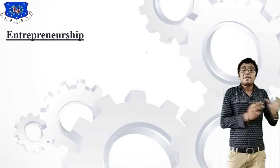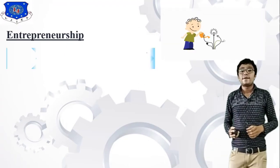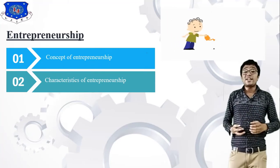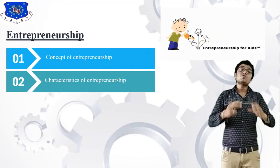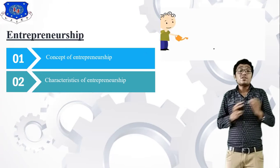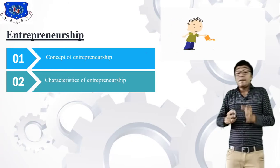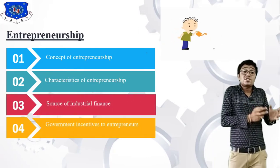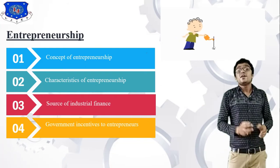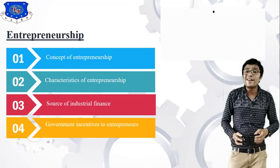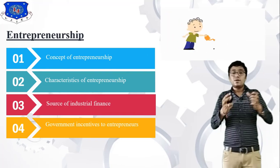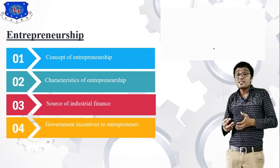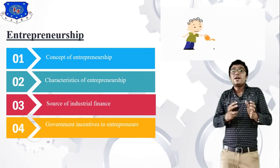The last chapter is Entrepreneurship. In this chapter we will discuss the concept of entrepreneurship — it is always a long-term process, not a short-term one. Topics include characteristics of entrepreneurship, concept of entrepreneurship, sources of industrial finance, and government incentives to entrepreneurs. Overall, this subject covers location selection and plant layout, production planning and control, industrial legislation, statistical quality control and inspection, and entrepreneurship.